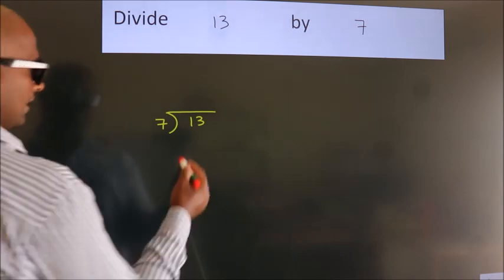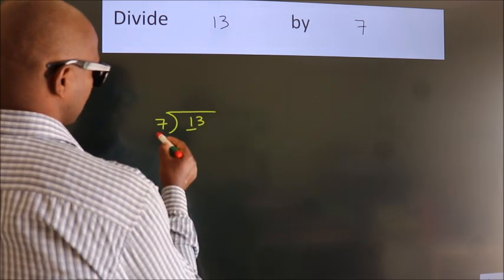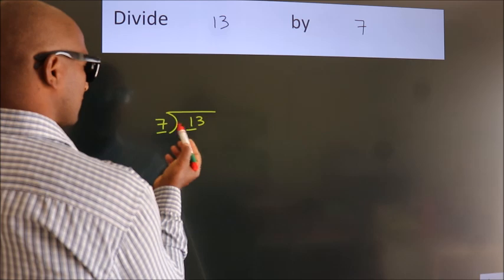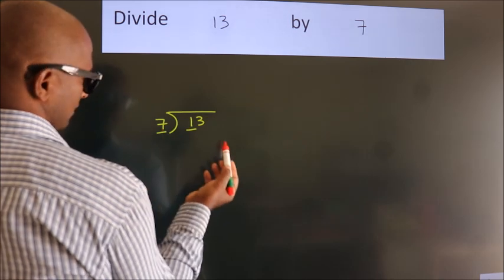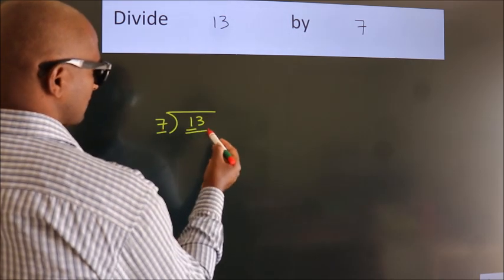Next. Here we have 1, here 7. 1 smaller than 7. So we should take two numbers. 13.